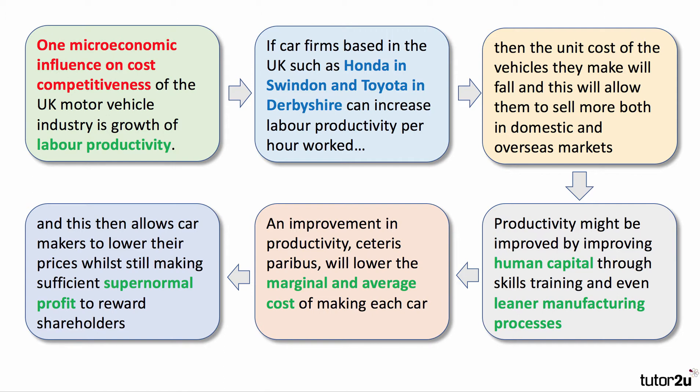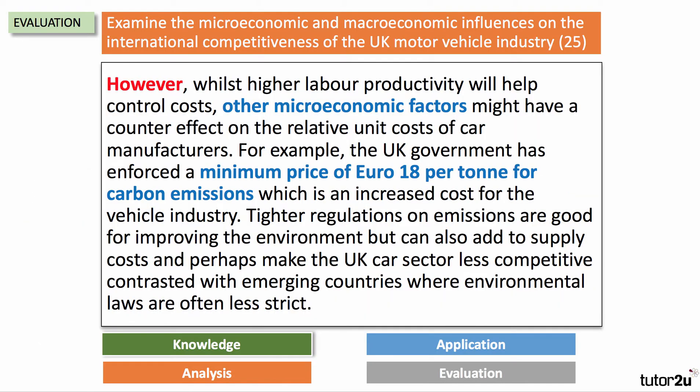Productivity might be improved through human capital investment via skills training and leaner, just-in-time manufacturing techniques. An improvement in productivity, ceteris paribus, will lower both the marginal and average cost of making each car. This then allows car makers to cut prices while still making sufficient supernormal profit to reward shareholders. However, whilst higher productivity helps control costs, other factors may have a counter-effect — for example, the UK government's enforced minimum price of 18 euros per tonne for carbon emissions adds costs. Tighter environmental regulations can make the UK vehicle sector less competitive compared to emerging countries where environmental laws are often less strict.